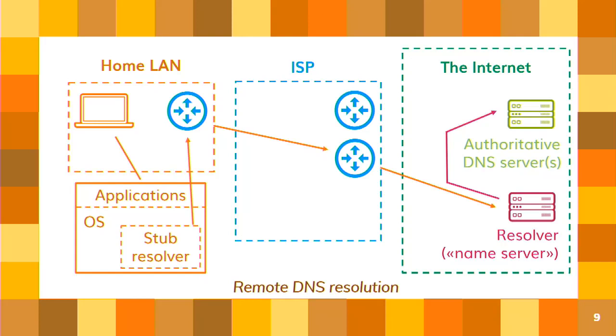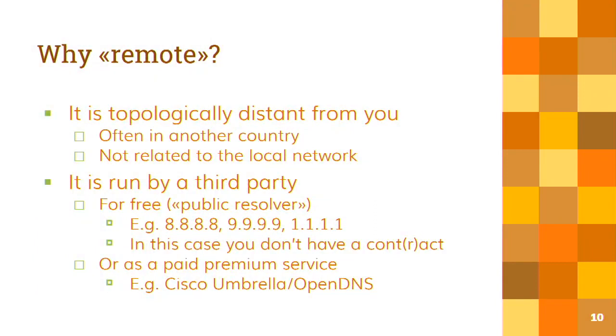In the remote model, your stub resolver connects through your ISP's network and goes out to the internet to talk to a remote resolver, which does the resolution and sends back the results. This remote DNS resolution model has quite some differences: the server is now in another country and there's no relation between the local network and the people resolving names for you. Typically it's a free resolver — the most famous one is 8.8.8.8, provided freely by Google. These are people you don't have a contract with and no clear conditions of service. In some cases there's even a paid premium service, such as OpenDNS.